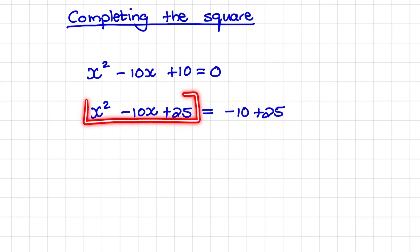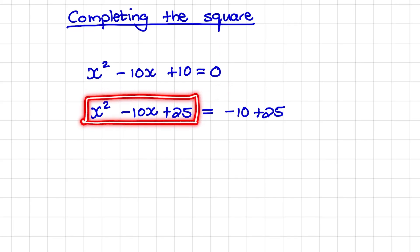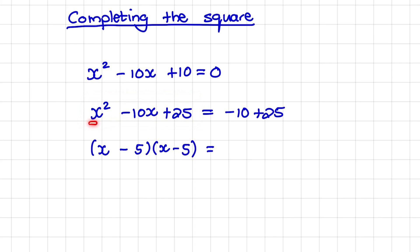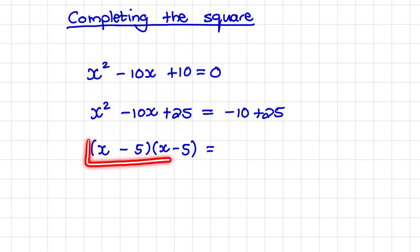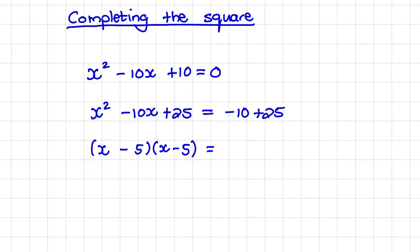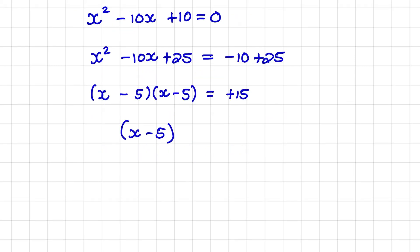What we have created on the left hand side is called a perfect square, meaning we have created a trinomial that we are able to factorize. So when I factorize x squared minus 10x plus 25, it will lead to x minus 5 multiplied with itself, and that is equal to positive 15. We have created a perfect square — a bracket multiplied with itself — so we are closer to solving for x.